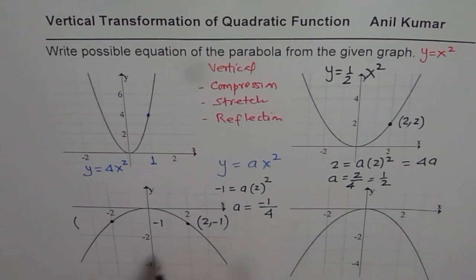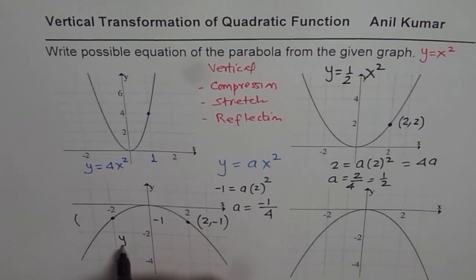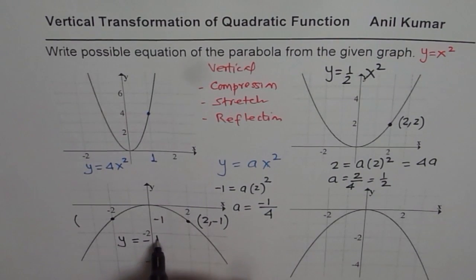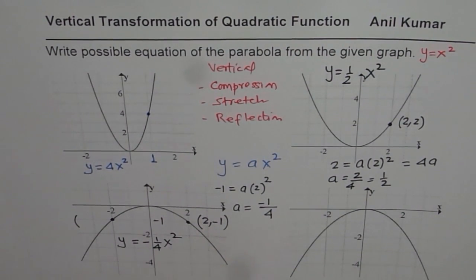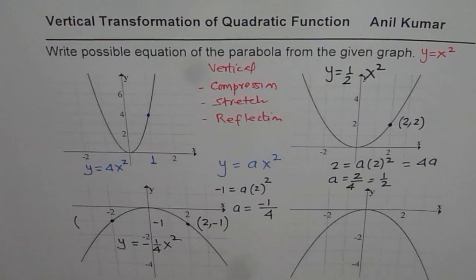Since a is minus 1 over 4, we can write the equation of this graph as y equals to minus 1 over 4 x square.